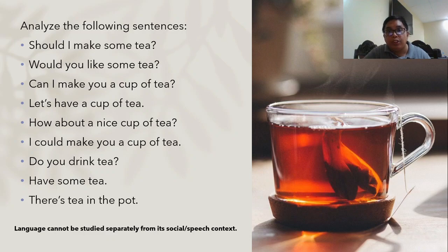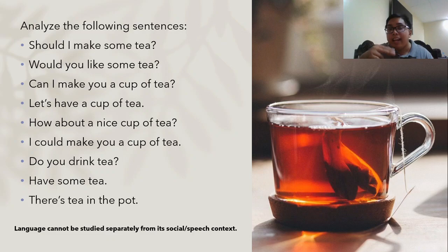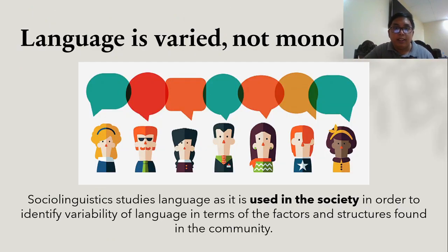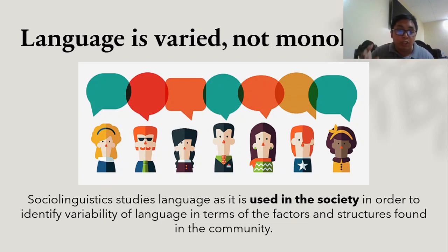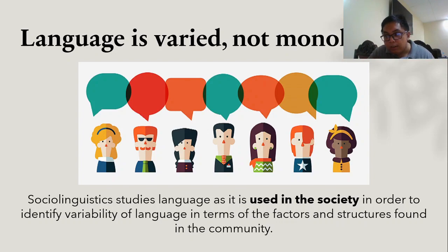You have learned many ways to tell someone you love them, and it goes the same way with inviting someone for tea — that speaks of the experiences you've had as a person. Throughout your life you have different communicative experiences. Therefore, language is varied, not monolithic. Sociolinguistics studies language as it is used in society in order to identify variability of language in terms of the factors and structures found in the community, and we need to know how language is used in society and how it helps us create good communicative experiences.